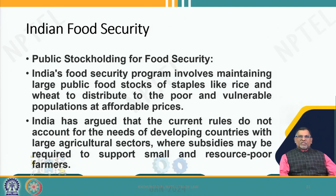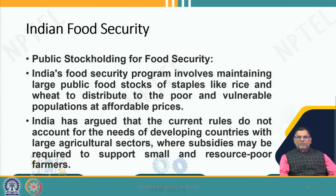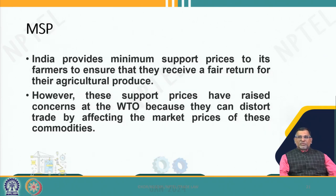The most important Indian concern is with regard to public stock holding and public stockpiling of rice, wheat and other grains distributed to people. Countries like the United States say this is a trade-distorting subsidy and should be included in the total AMS. But it is the primary duty of a sovereign government to feed its population, and the minimum support price is required to support poor farmers as well. Developed countries should understand this and not look at everything through the lens of trade.